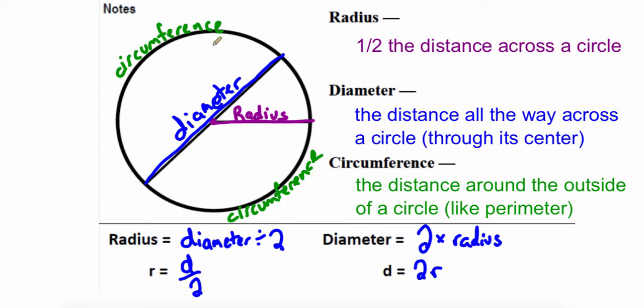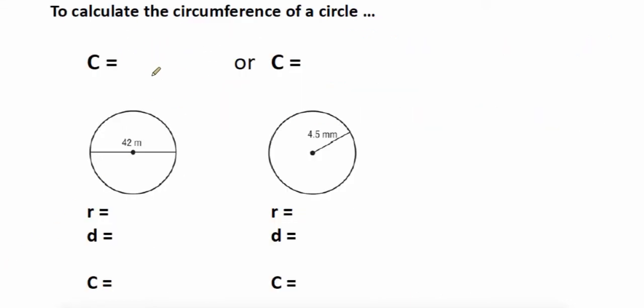Now we got our vocabulary down. Let's put it to use. To calculate the circumference, the distance around the outside of the shape, one number we're going to use is something called pi. It's that big number you see in the poster on my door.